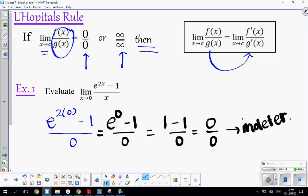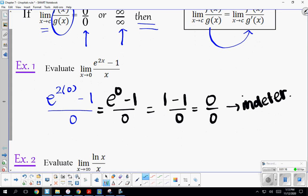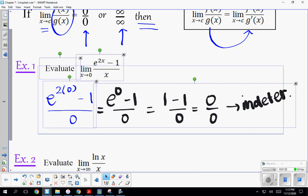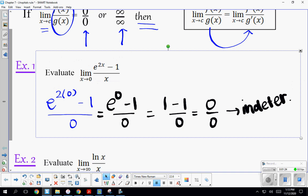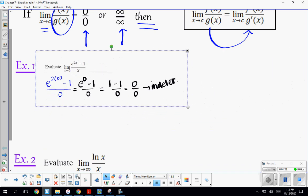That means I can apply L'Hopital's rule. Instead of trying direct substitution on my original limit, I can take the derivative of both the numerator and the denominator and try direct substitution again.